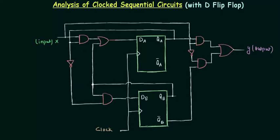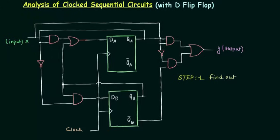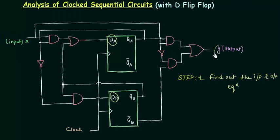The first step — step number one — is to find out the input and output equations. We will find out the expression for DA and DB, which gives us the input equations, and we will find out the expression for Y, which gives us the output equation. So these three things we have to do now.